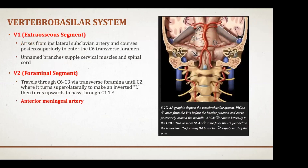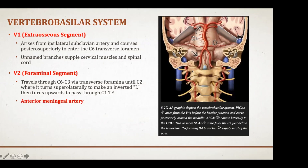The vertebrobasilar system, or posterior circulation, begins with the vertebral artery arising from the subclavian artery. It enters the transverse foramen at C6 and runs within the transverse foramina from C6 to C3. At C2 it courses outward and superiorly. The foraminal segment runs from C3 to C6, then makes an inverted-L turn to pass through the C1 transverse foramen. The biggest branch here is the anterior meningeal artery, which supplies the dura.